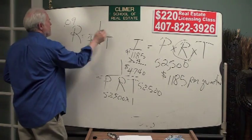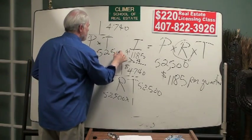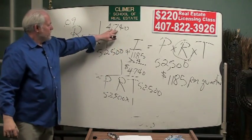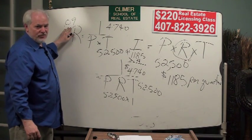$4,740 divided by $52,500 is 9%. So we got 9% interest, $4,740, $52,500. So $4,740 divided by $52,500, that's a 9% interest rate.